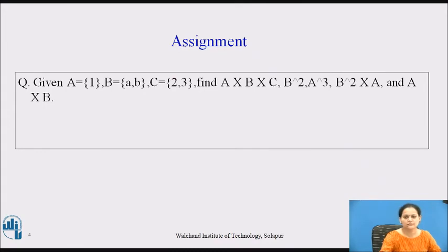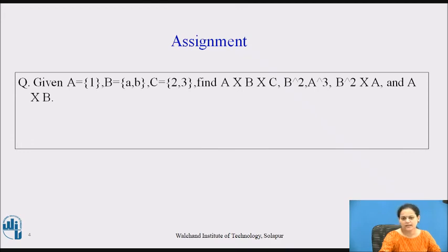See the assignment question for all of you. Given A = {1}, B = {a, b}, and C = {2, 3}, you have to find the following Cartesian products: A×B×C; B² (which is B×B); A³ (which is A×A×A); B²×A (that means B×B first, then cross A); and finally A×B. These are the various Cartesian products you have to apply on the given sets A, B, and C.